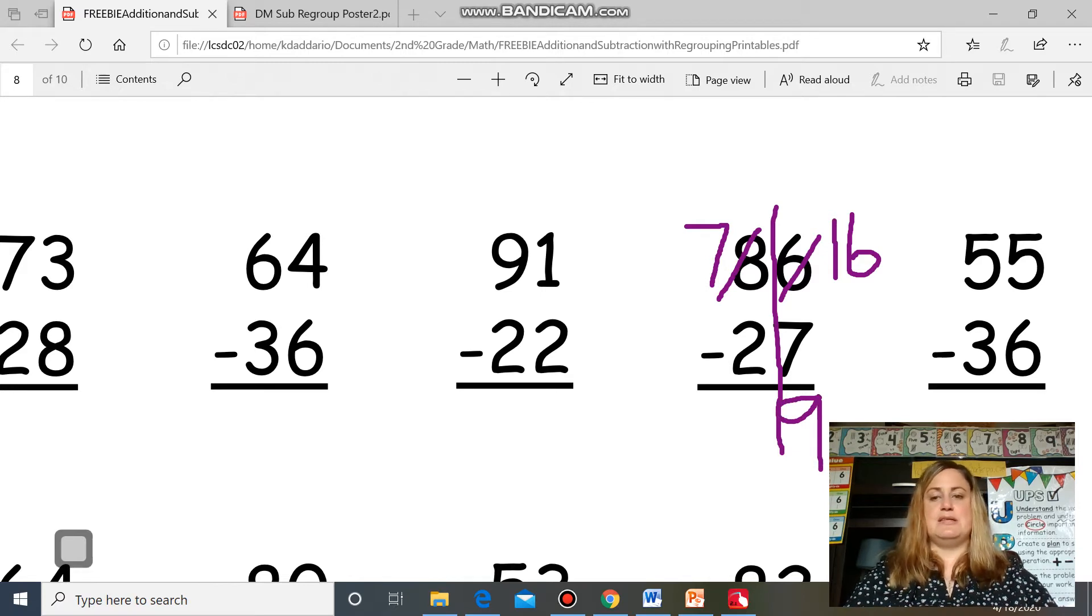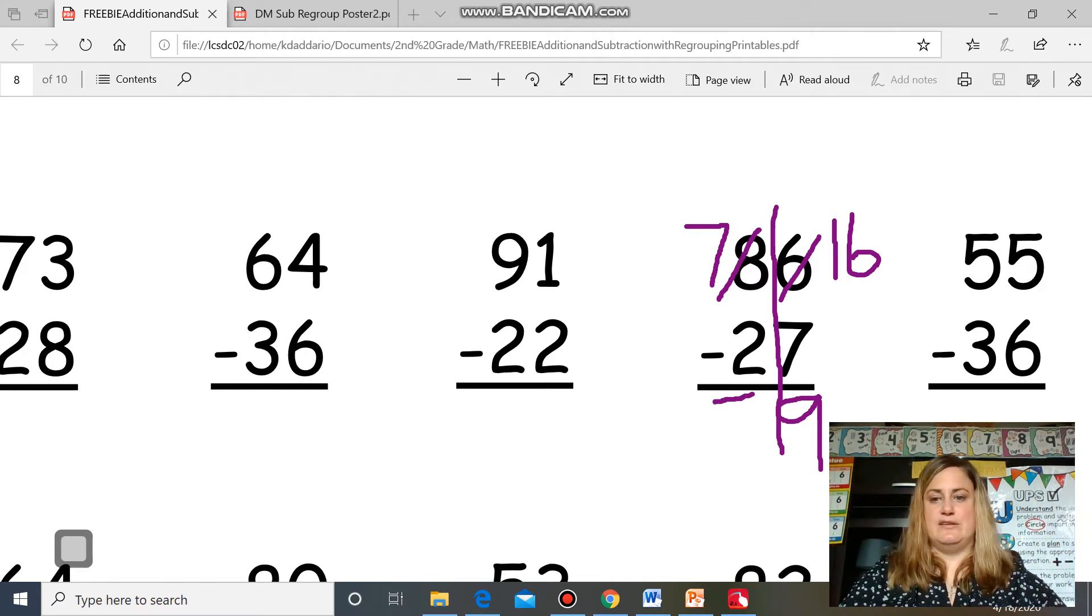I go to my tens place and take seven. I have seven fingers, take away two, I have five fingers left. So my answer is 59. That was just a quick review of our two-digit subtraction with regrouping.